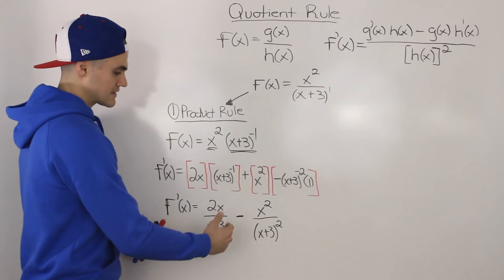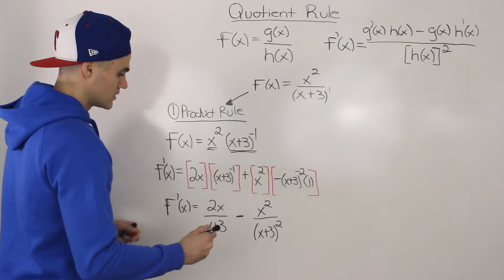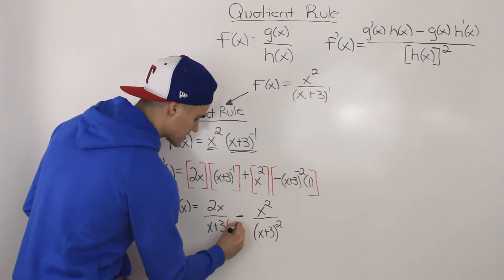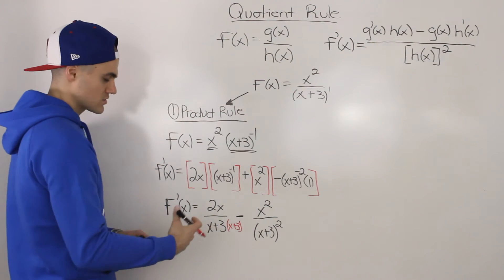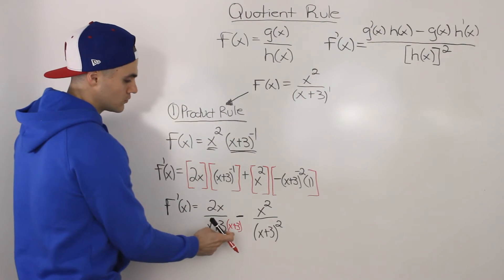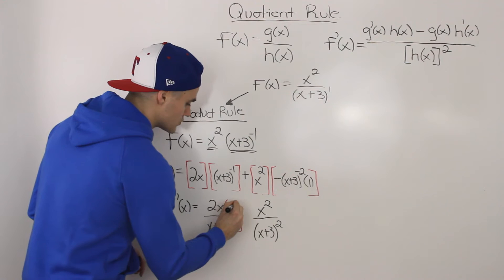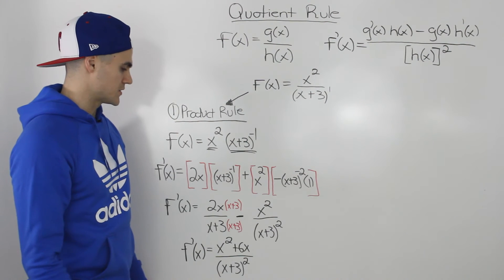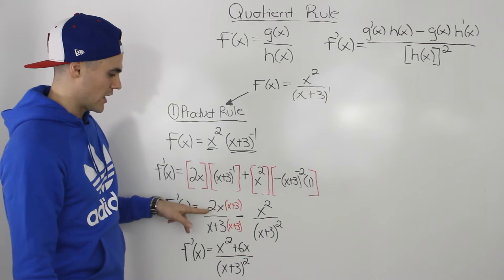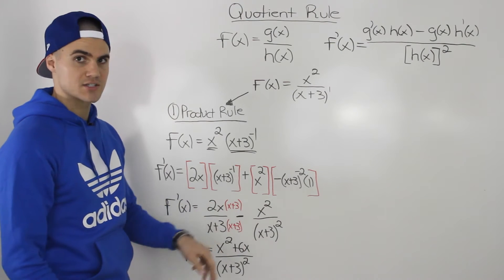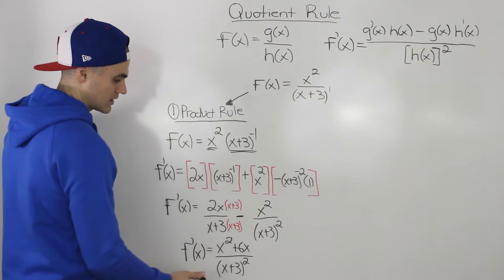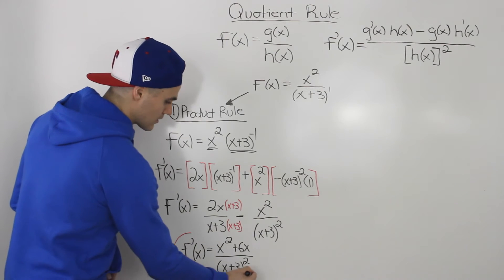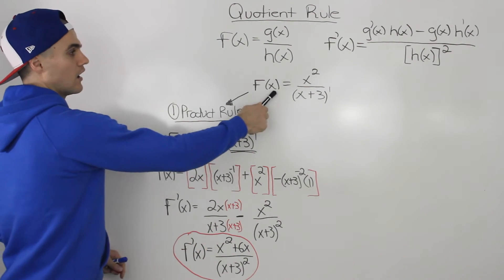Now we want to combine this into one fraction. To get a common denominator, we multiply the first expression by x plus 3, making the denominator x plus 3 squared. What we do to the bottom, we also do to the top. Combining the fractions and distributing 2x, we get 2x squared plus 6x minus x squared, which simplifies to x squared plus 6x, all over x plus 3 squared. That's the derivative using the product rule.